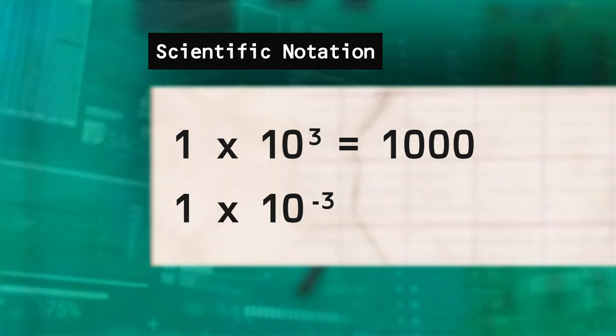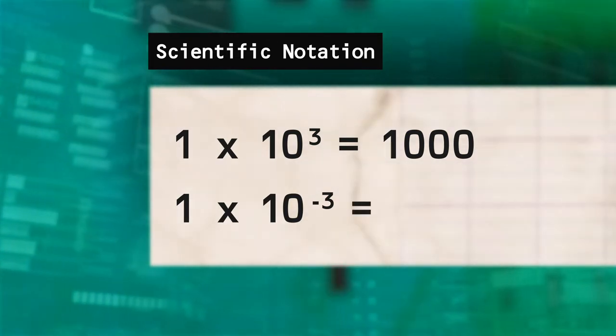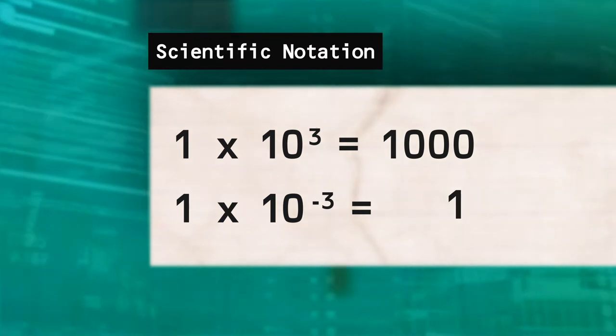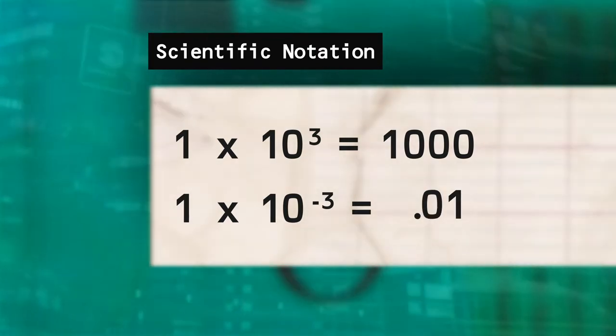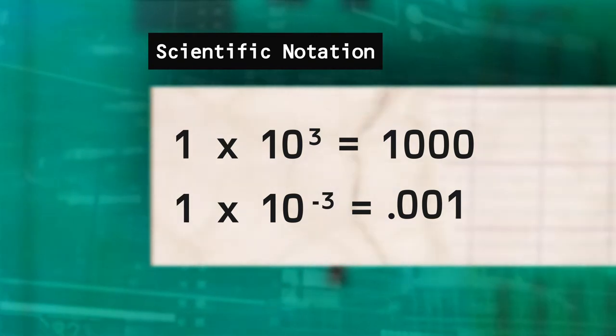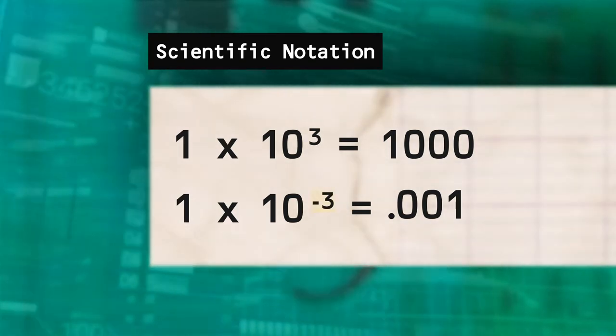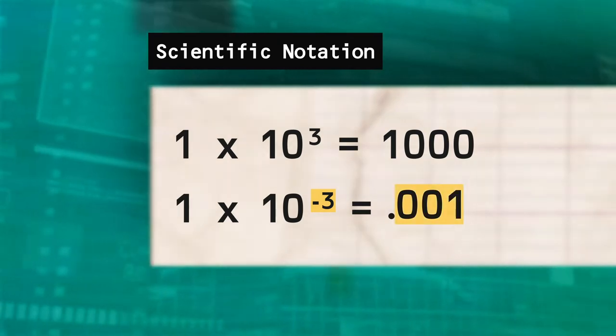Likewise, negative exponents mean we move the decimal to the left. Starting at one again, we go to one-tenth, one-hundredth, and finally one-thousandth. 1 times 10 to the negative third power is equal to one-thousandth.